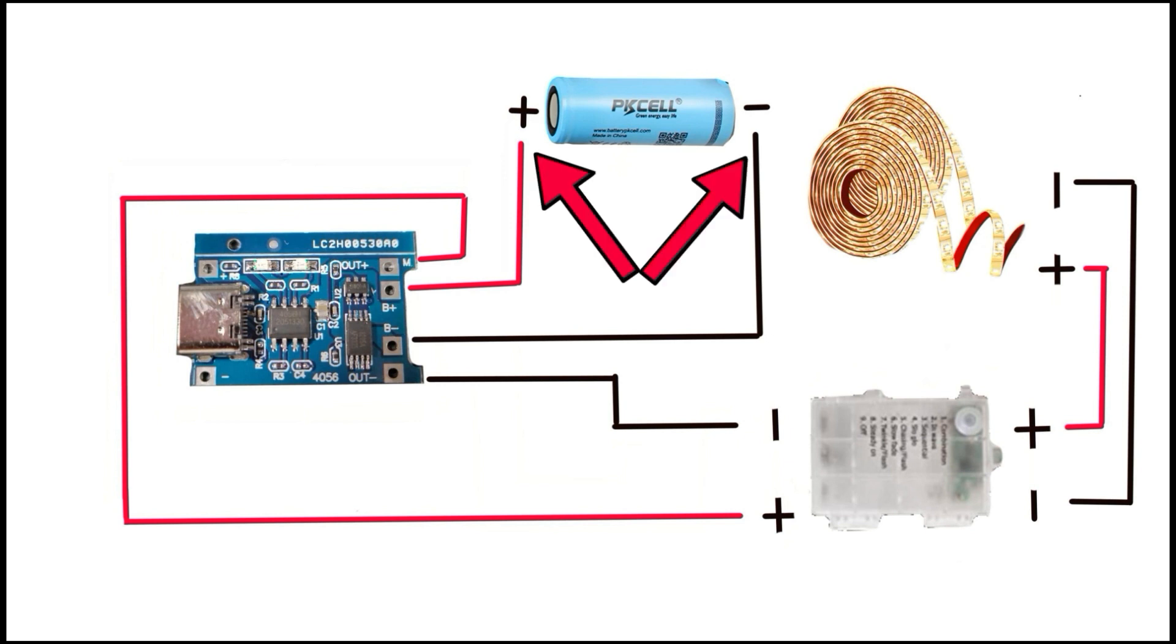Solder wires to your battery - use flux or your solder won't stick to the battery. For the control module, let me go over some things. Your Type C wall charger gets plugged into here. There are two LEDs next to each other - one is red indicating the battery is getting charged, the other is blue indicating your battery is charged and you can now unplug your charger. Your battery will get connected to the B plus and B negative terminals.